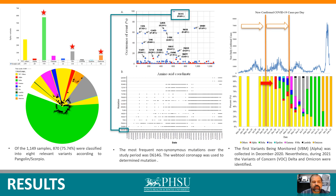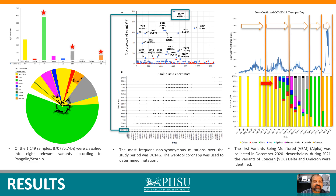During 2021, the Variants Being Monitored Iota, Epsilon, Gamma, Mu, and Lambda were identified. A high increase in Mu was observed during mid-2021, but it was rapidly displaced by the Variant of Concern Delta. Meanwhile, the Variant of Concern Omicron was observed at the end of December. A relationship between the emergence of new variants and new daily confirmed cases was observed.